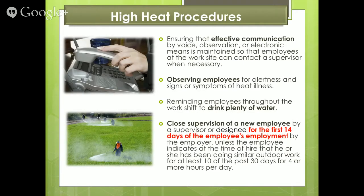The high heat procedures include: first, ensuring that effective communication by voice, observation, or electronic means is maintained so that employees can contact a supervisor when necessary. This should already be part of your emergency action plan, since heat illness is only one of many types of injuries or illnesses that can occur. The second step is observing employees for alertness and signs and symptoms of heat illness, and reminding employees throughout the work shift to drink plenty of water. These are not really different regulations — it's a more vigilant effort in applying the regulations that already exist.